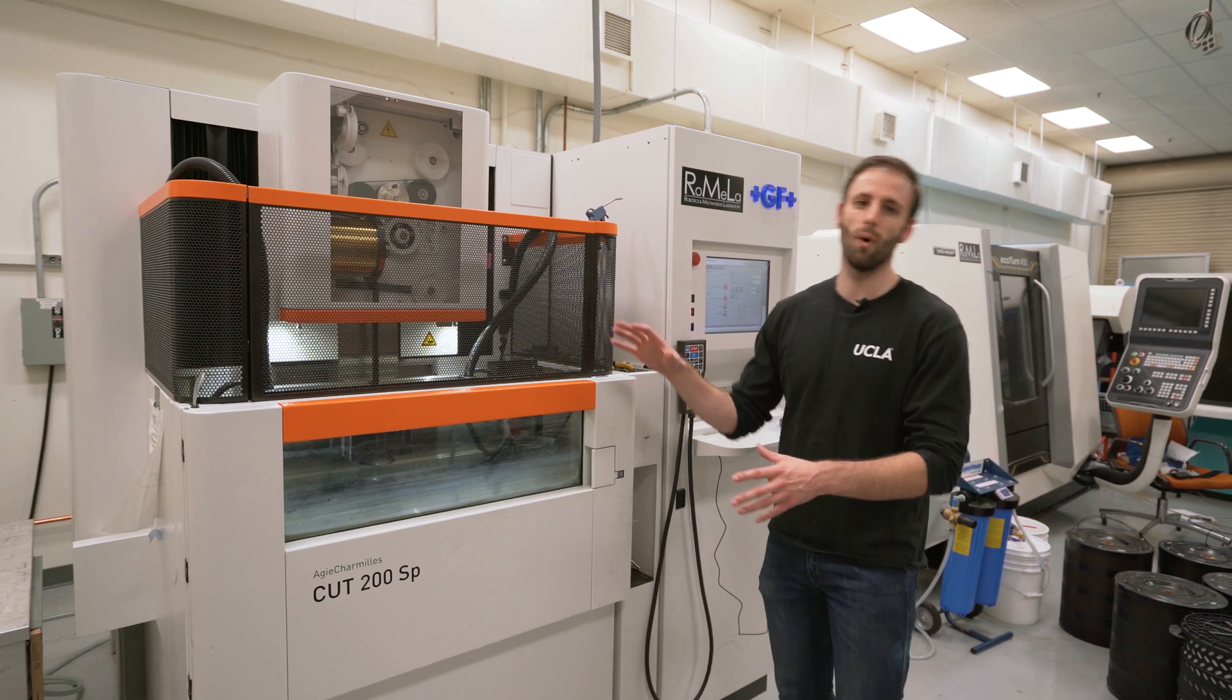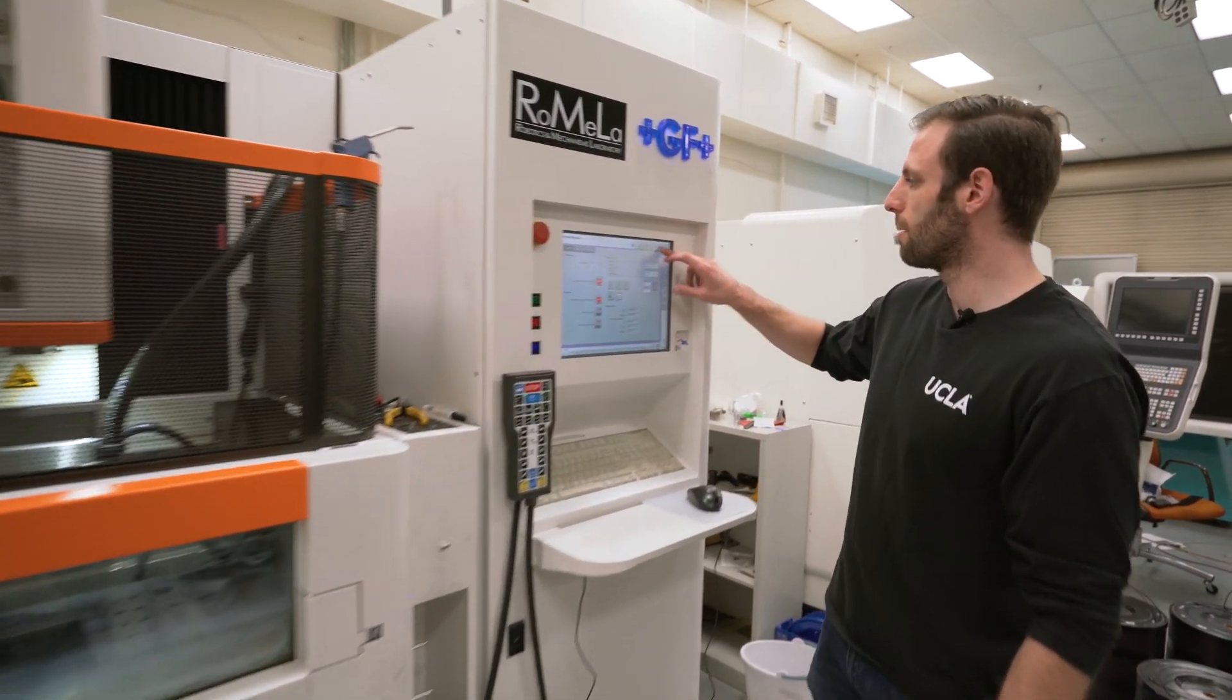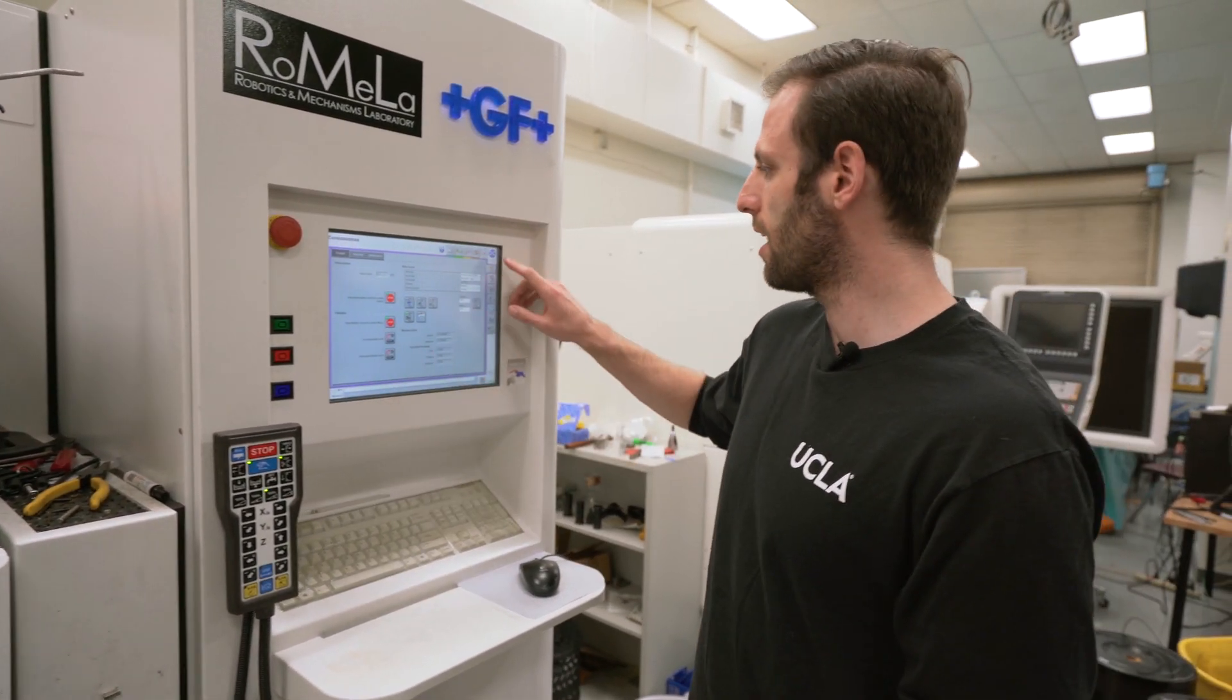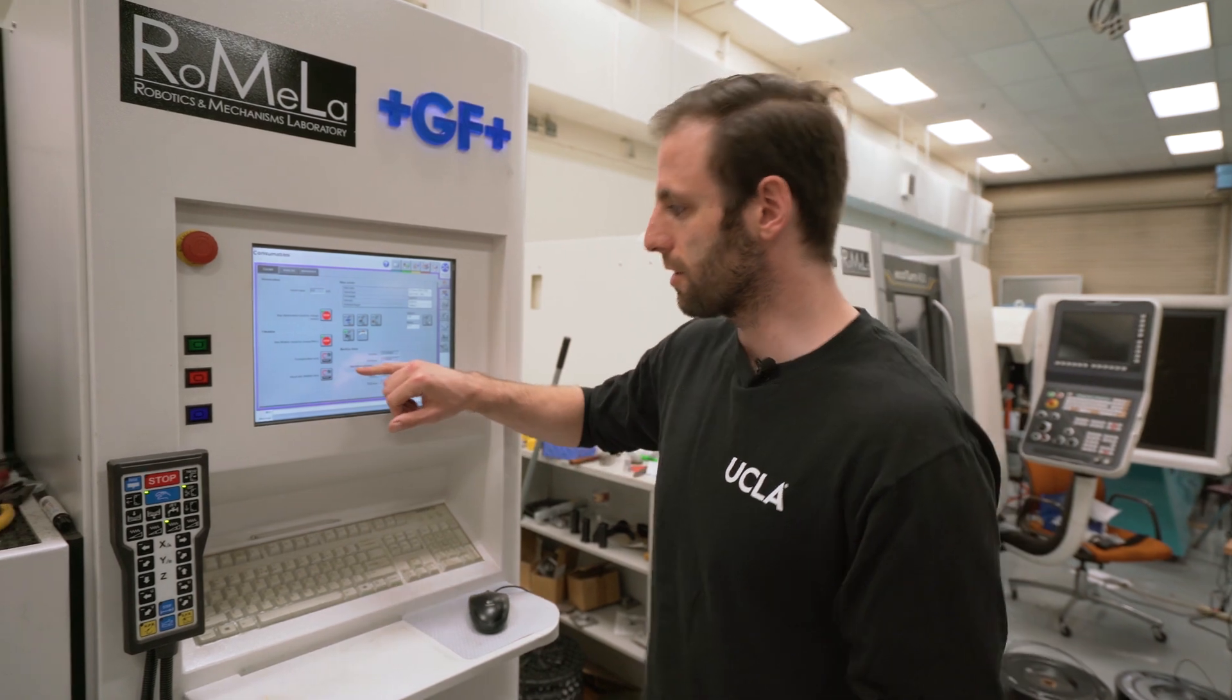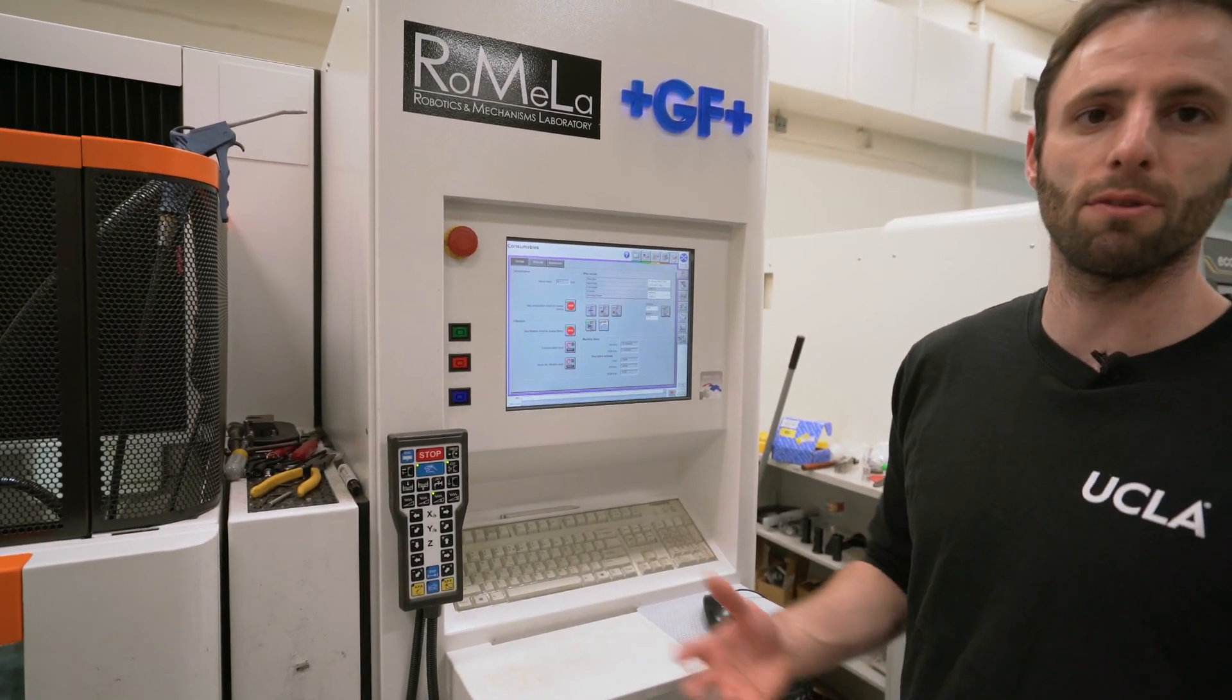The machine will let you know when you need to grease. It'll actually be on the maintenance page. You'll get a warning that says the machine needs to be greased. And then on the consumables, you'll see this time before greasing. Right now we're negative, which means that you have to be greasing.